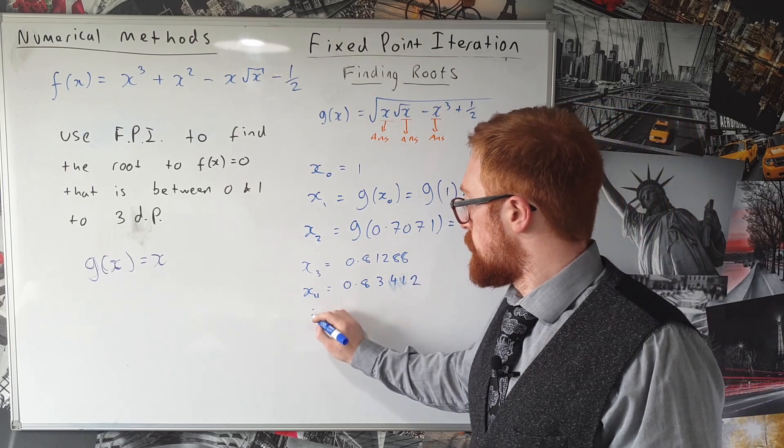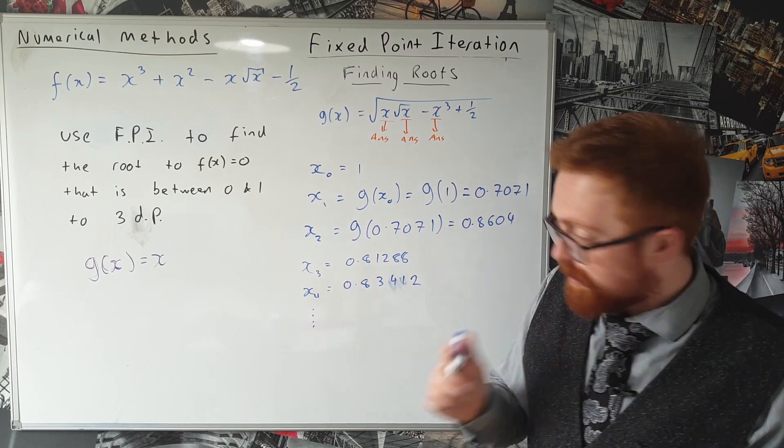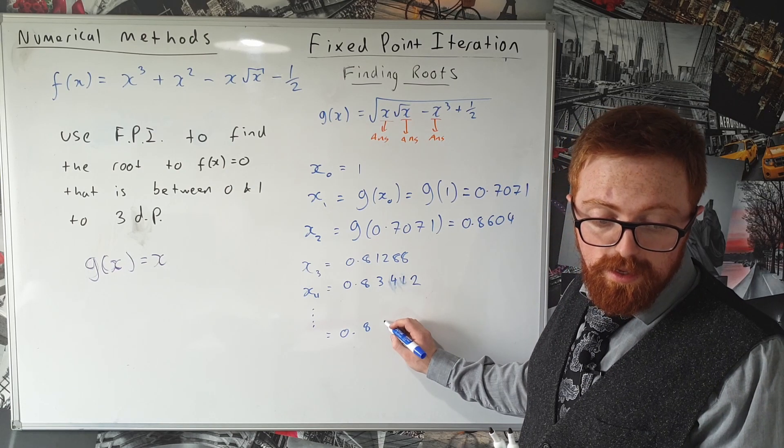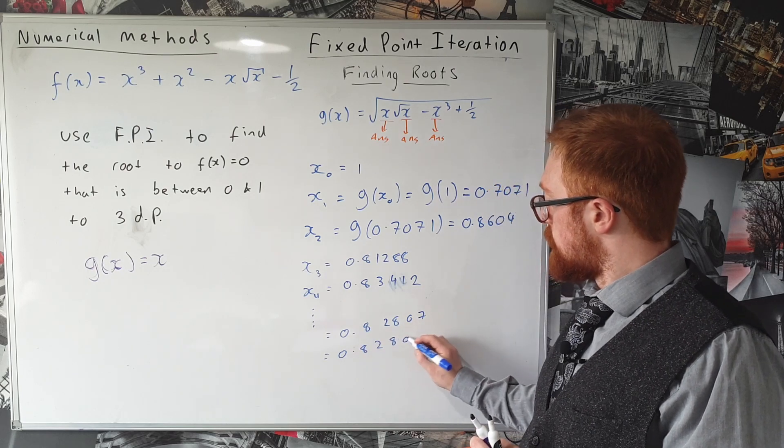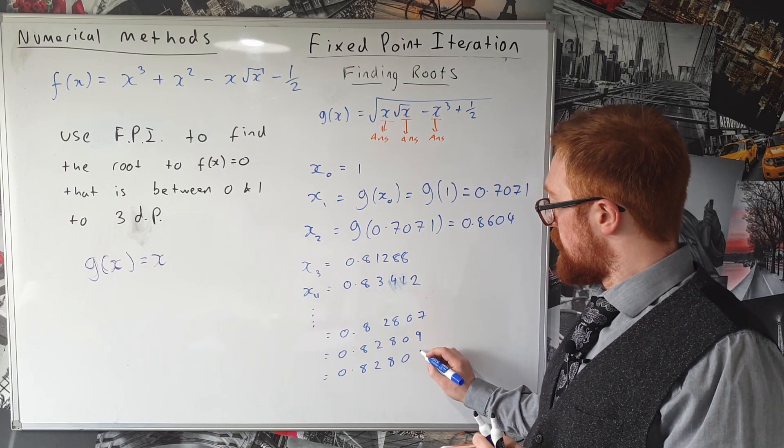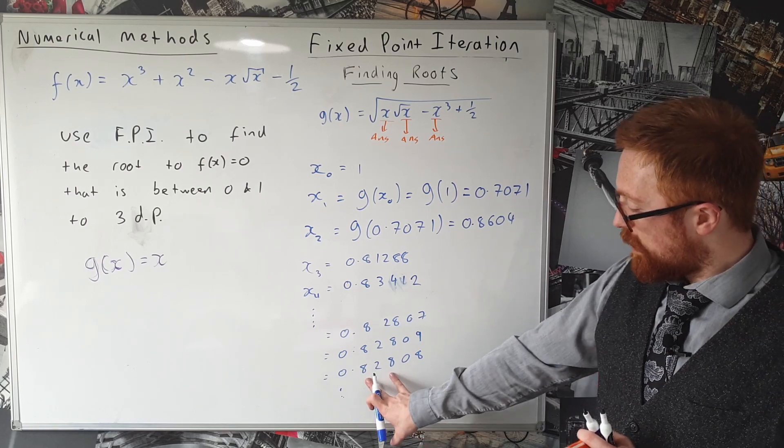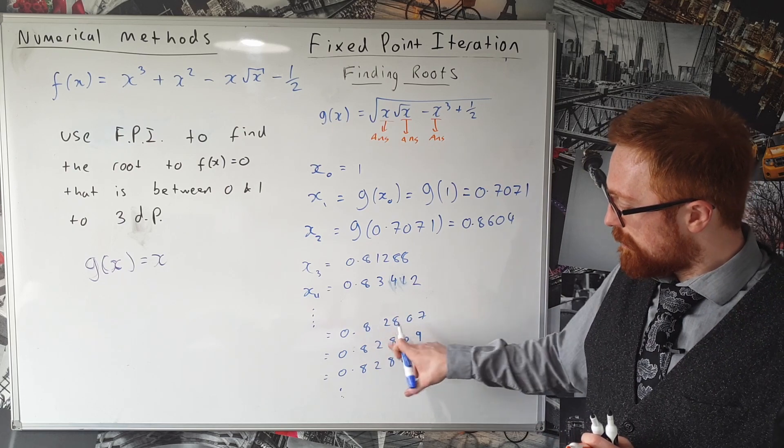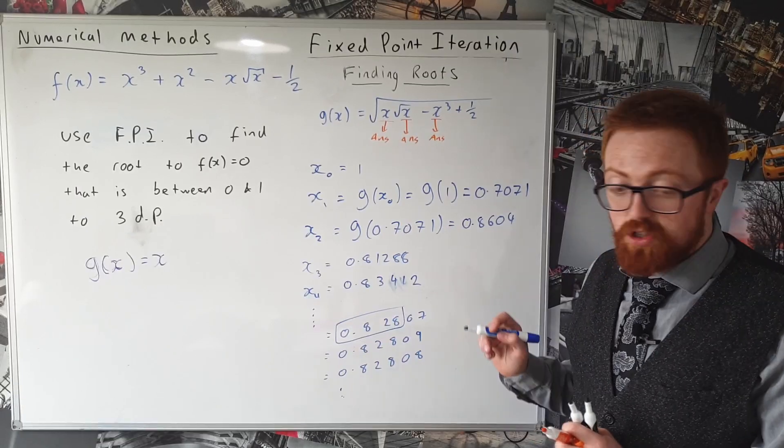OK, and if we do this over and over again, eventually we get to the point where we have 0.82807, 0.82809, and 0.82808 and so on. So we'll get to this point where some of these digits are repeating. So I'm assuming that to three decimal places my solution is going to be 0.828.